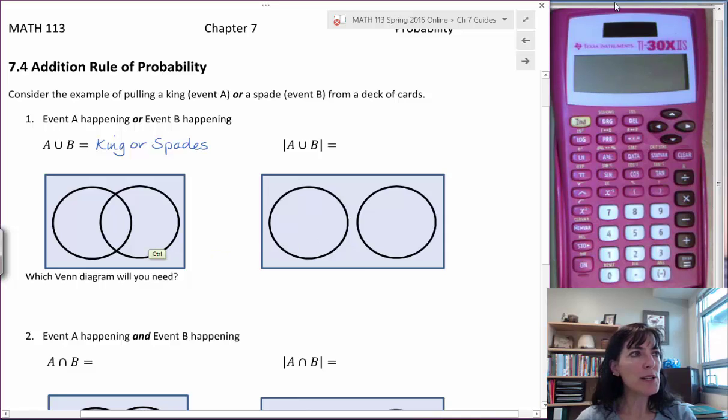And then looking at these two Venn diagrams, which is the one that we're going to need? Because I have a king and there's four kings, and there's one from each suit. And then I have one of the suits, which is spades. So there will be something in that intersection. There will be a card that fits both event A and B, and that is the king of spades. So we do need this one that has the overlap in the middle. And we don't need this one because there is no overlap.